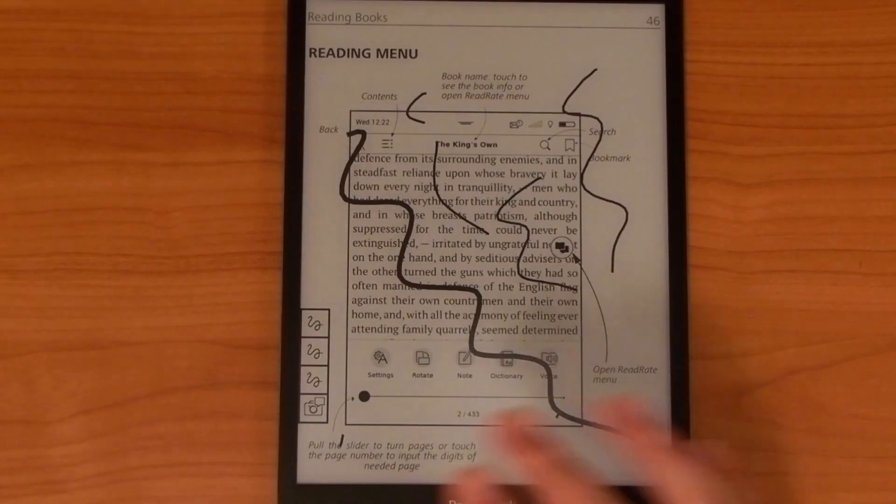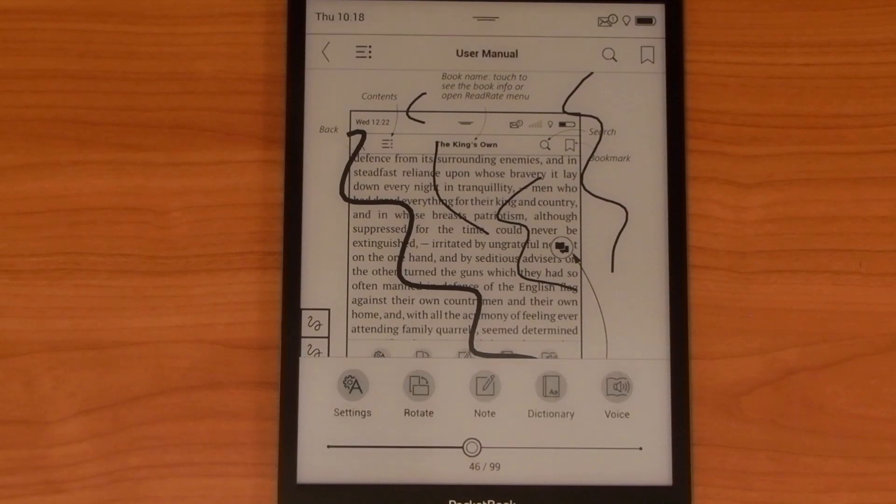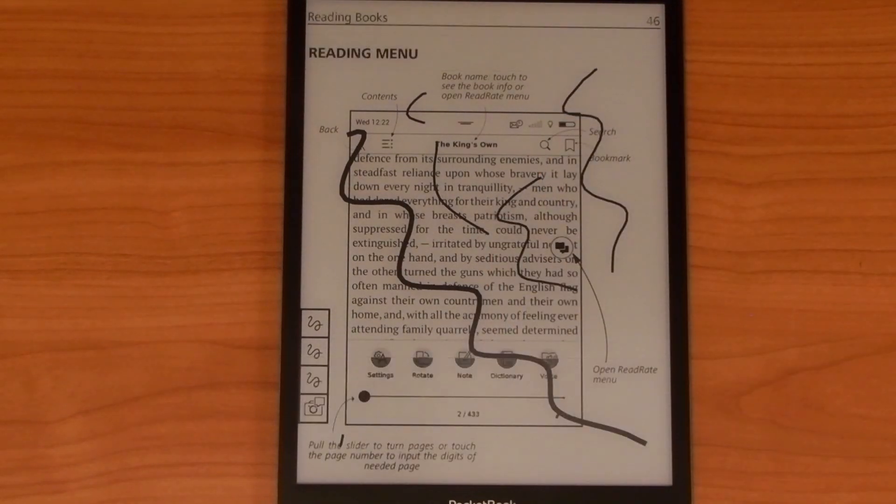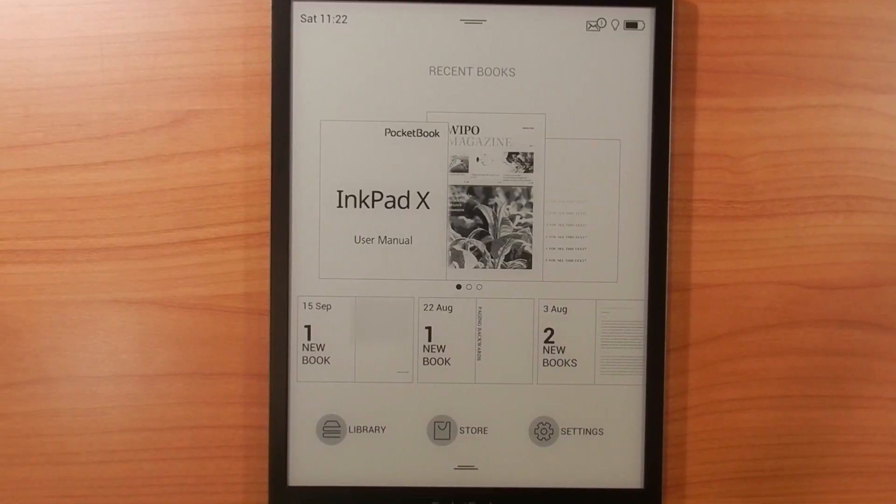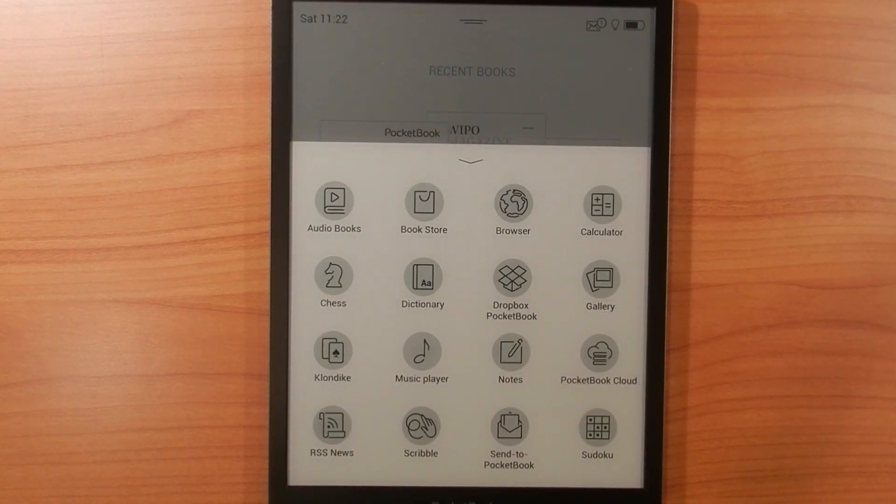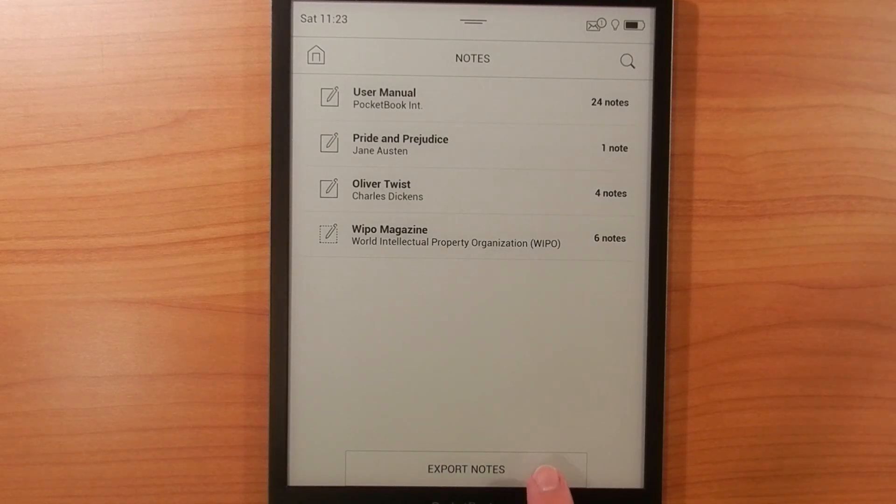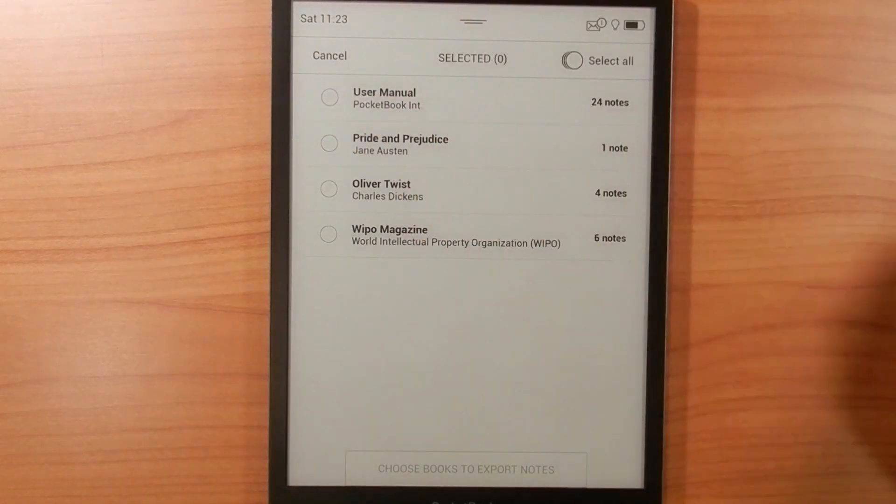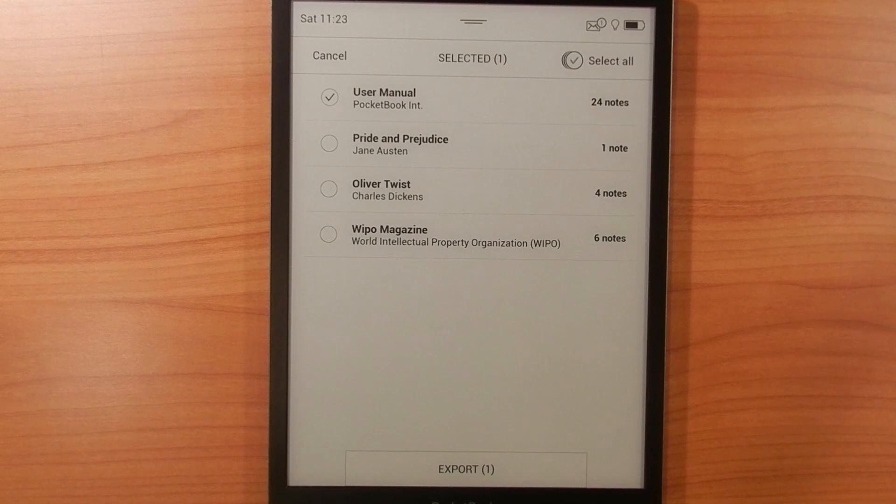Exporting your annotations off the InkPad X is anything but straightforward. As you can see, looking at the main in-document menu on the InkPad X, there's no simple export shortcut. Once you've made your annotations on the device, you then need to go back out to the main menu. From the main menu, you need to open the list of apps. In here, you need to select the Notes app. Once you're in the Notes app, you'll be prompted to select the document you want to export your annotations from. After this, tap Export to export your notes.